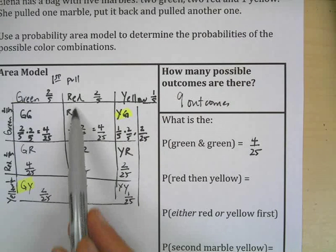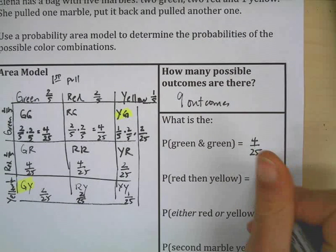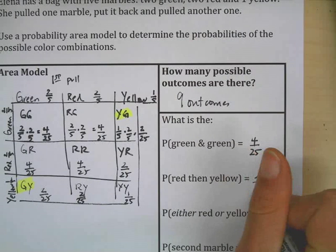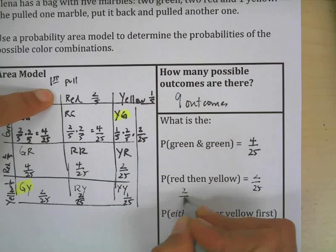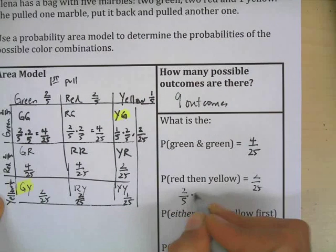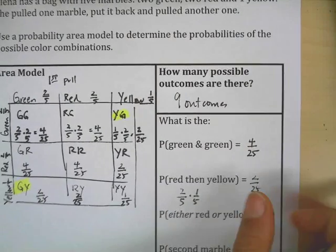What's the probability of picking a red first and then for our second pull getting a yellow? So that's right there, two twenty-fifths. You know, you could show the math of what it is: it's two-fifths times one-fifth, so that's how we get the two twenty-fifths.